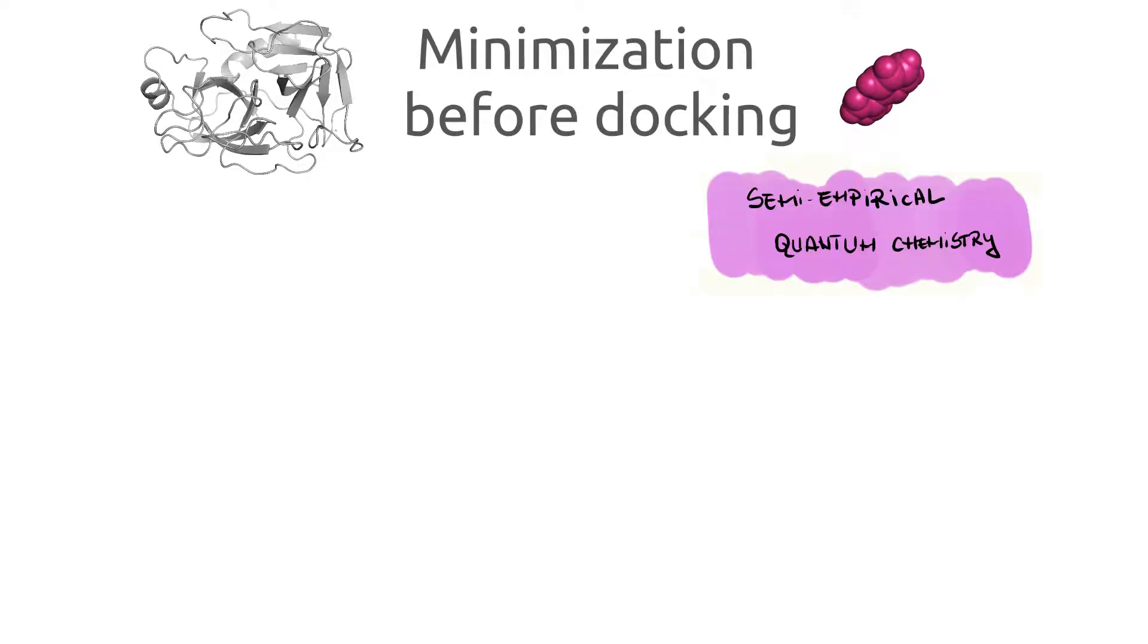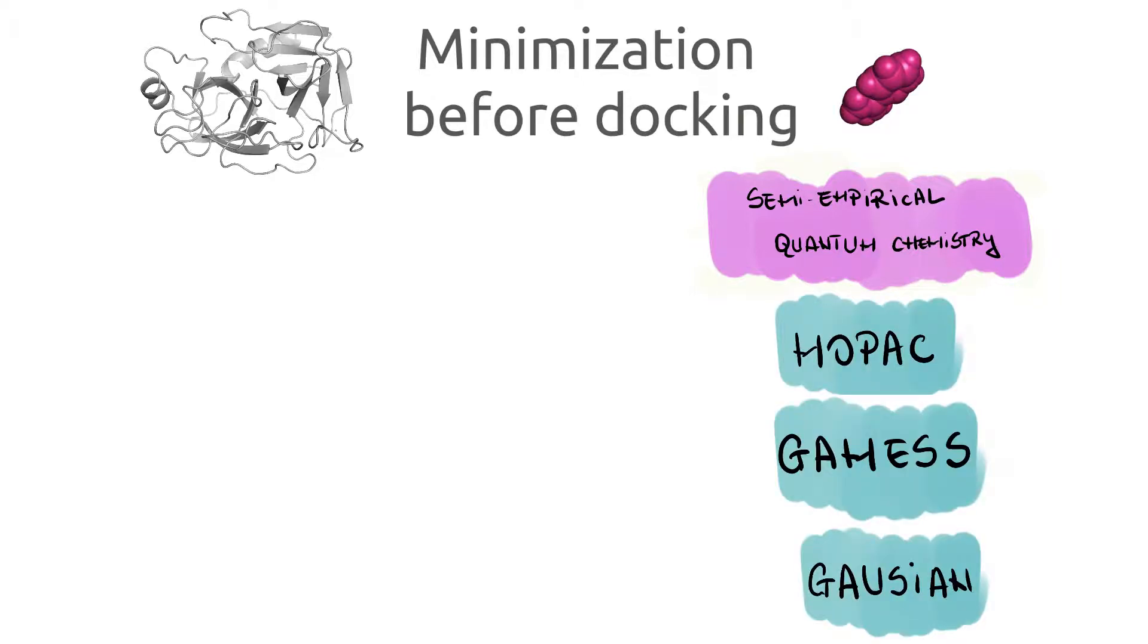What we also should know is that docking methods have two important input structures: the ligand on one hand and proteins on the other hand. In case of ligands, we can use semi-empirical or quantum chemistry optimization methods as implemented in various software tools such as MOPAC, GAMESS, or Gaussian. Some of these are open source and free to use for academic purposes.